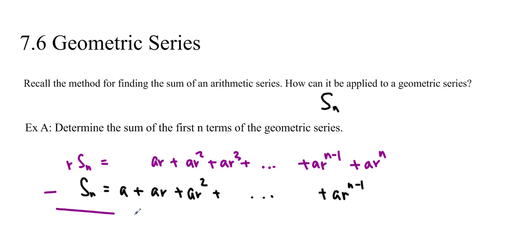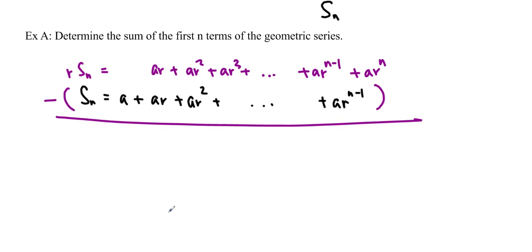So this is an elimination. So we're going to do a subtract, and you're subtracting all of these terms from all of the top terms. So in the front, we're going to get r times s sub n minus s sub n. And here we're going to get 0 minus a, ar minus ar, which is 0, ar squared minus ar squared, 0, and so forth. So all of these end up being 0 until we get to ar to the n because that's actually going to be minus nothing. So you just get ar to the n.